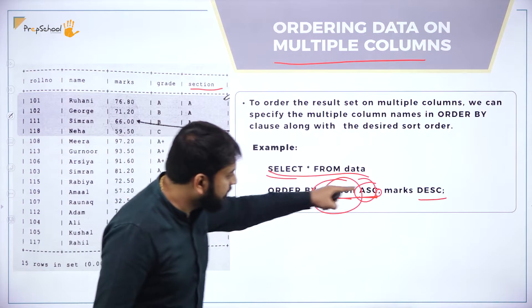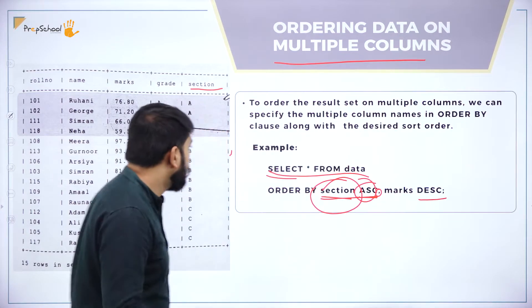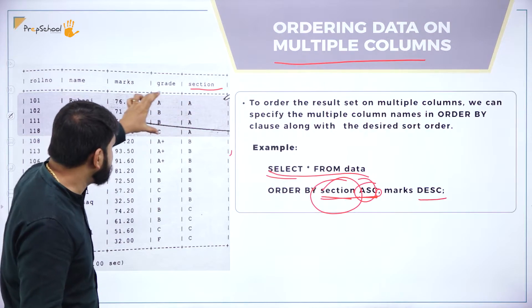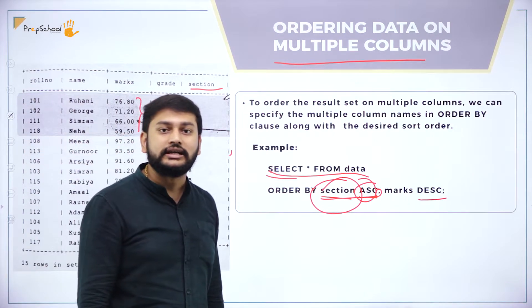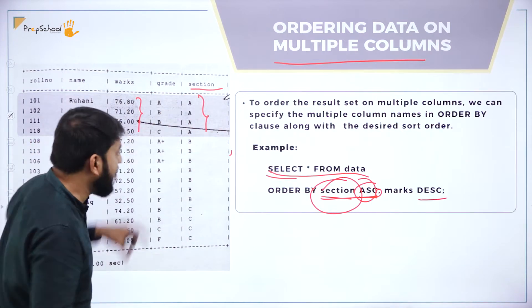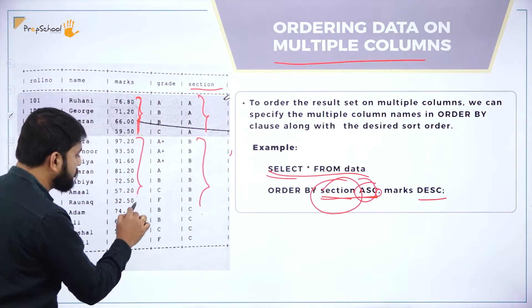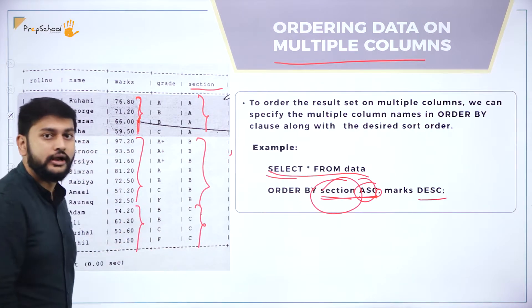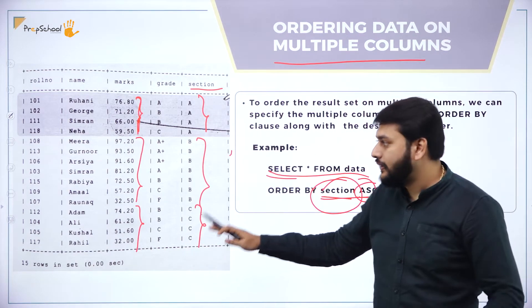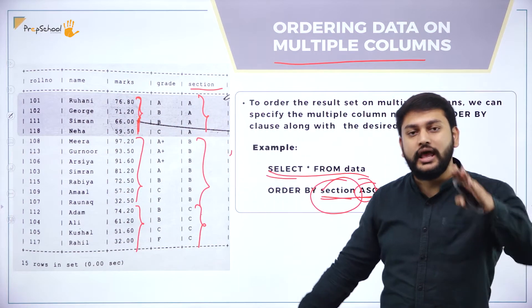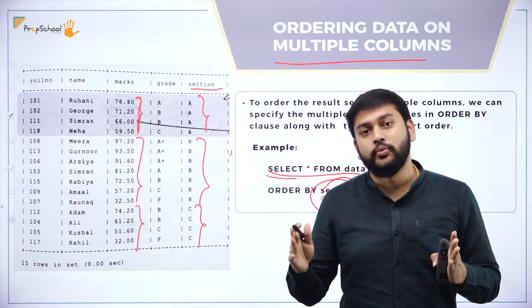Then for each value in the section column, the marks are sorted in descending order. So for section A, marks are sorted descending; then for section B, marks are sorted descending; then for section C, marks are sorted descending. The sorting happens column by column.